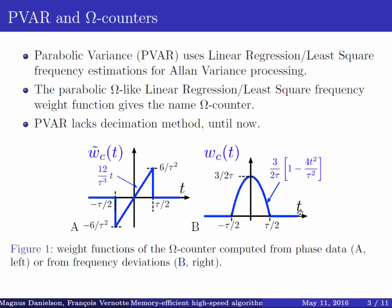Just to give a quick recovery, this is relatively new stuff compared to the 50 years we had with Allen Variance. The parabolic variance uses the linear regression, least square method, for the frequency estimation that you then toss into Allen Variance analysis. The parabolic omega, big omega shape, is what you can see here, is really the weighing of the frequency values.